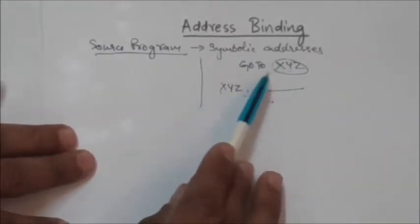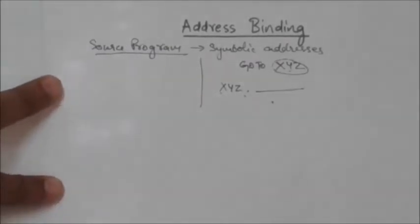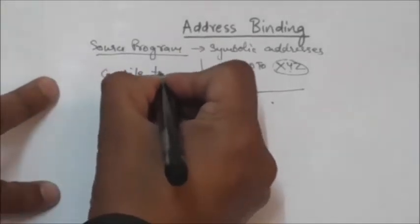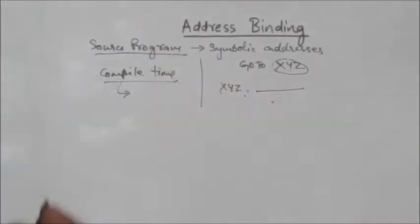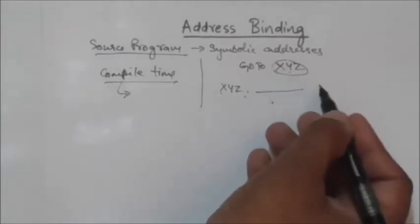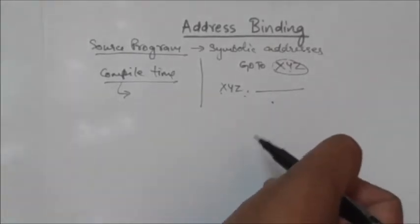The physical address corresponding to a symbolic address depends on where the process will reside in main memory at the time of execution. If at compile time it is known where the process is going to reside in memory, then at compile time we can bind these symbolic addresses to the physical addresses. By binding, I mean mapping.